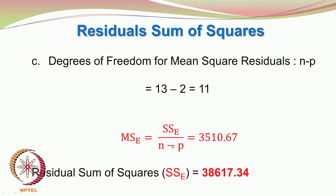The mean square error would be sum of squares of error divided by n minus p. We divide the residual sum of squares, which we found as 38617.34, by 11, and we get 3510.67.